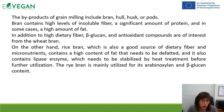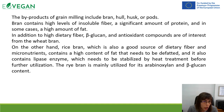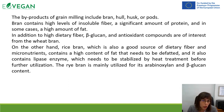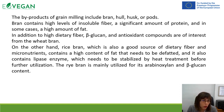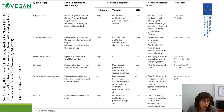Byproducts of grain milling include bran, hull, husk, or pots. Bran contains a high level of insoluble fiber, a significant amount of protein, and in some cases a high amount of fat. In addition to high dietary fiber and beta-glucan, antioxidant compounds are of interest from wheat bran. Rice bran is also a good source of dietary fiber and micronutrients, but contains a high fat content that needs to be defatted, and contains enzymes that need to be stabilized by heat treatment before further utilization. The idea is to use these key components of byproducts in developing functional properties and functional food.